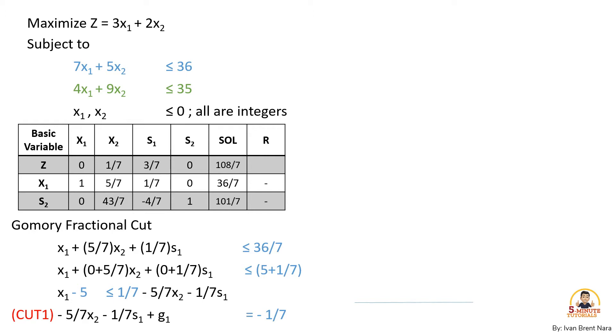The cut or our Gomory fractional cut will be inserted in the tableau as another constraint. Look at the graph how the cut will affect the optimum region. This is what our first constraint, the second one, and the fractional cut will be like this. As you can see, it moved inside from our old region.